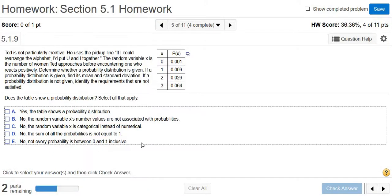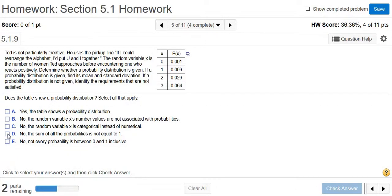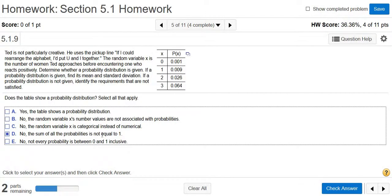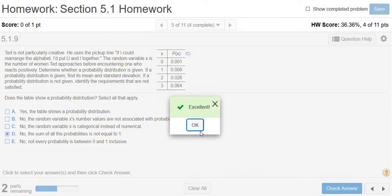So yeah, we get .1, so we don't get 1, right? .1 is not the same as 1. So it's going to be this one. No, the sum of all the probabilities is not equal to 1. So click check answer. Good stuff.